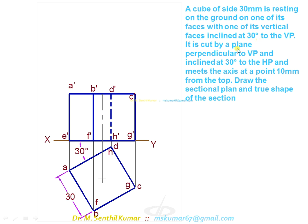Let us see that it is cut by a plane perpendicular to VP inclined at 30 degrees to HP. So there is a line at an angle 30 degrees either this way or that way. Both are correct. 10mm from the top. So from the top measure 10mm. From the top on the axis measure 10mm.